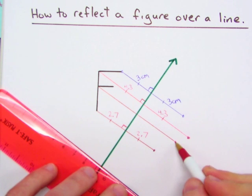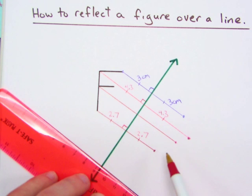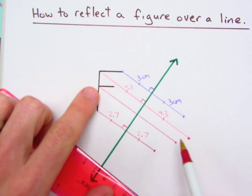Notice these three points here should be collinear because they were collinear over here. Because ultimately, our figure needs to be congruent to the image.